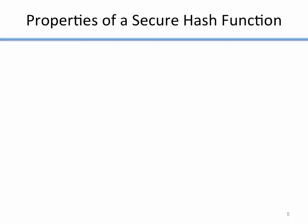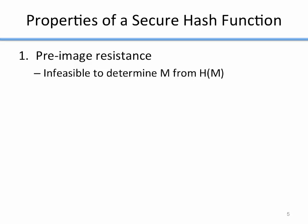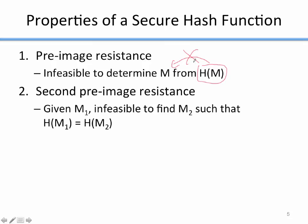What are the properties of a secure hash function? Not every hash function is useful for security — only cryptographic hash functions. The first property is pre-image resistance: given a hash, it's infeasible to determine the message m from h(m). If I give you a hash, you can't easily go backwards to the message. The second property is second pre-image resistance: given m1, it's infeasible to find another message m2 such that h(m1) equals h(m2). So if you give me a specific message, I can't find another message that has the same hash.